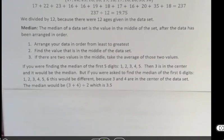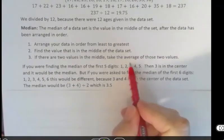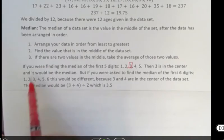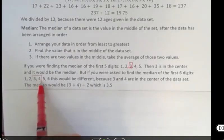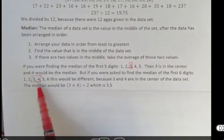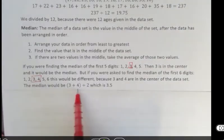For example, if you were finding the median of the first five digits, then three is in the center because after we pick the three, there's two digits on either side and that would be the median. But if you were asked to find the median of the first six digits, then three and four are in the center of the data set. And so the median would be the average of those two numbers: three plus four divided by two, which is 3.5.